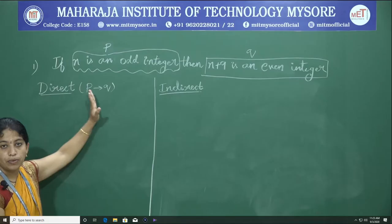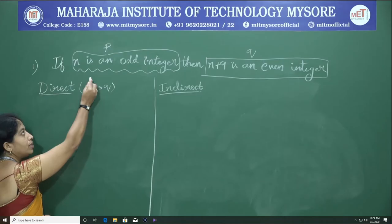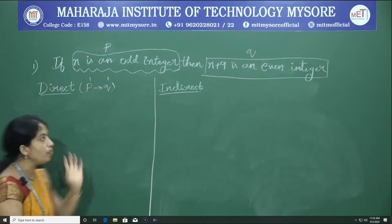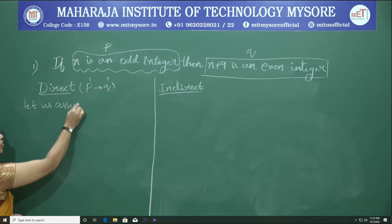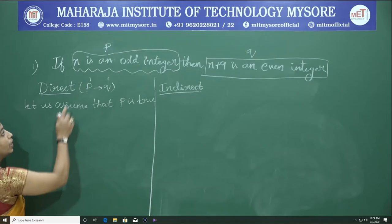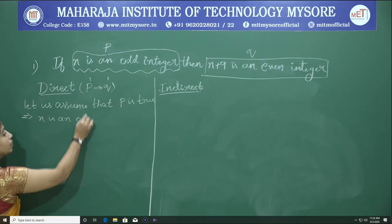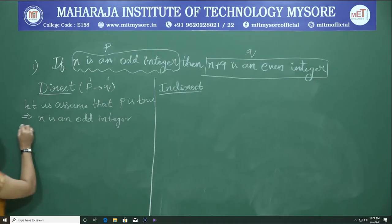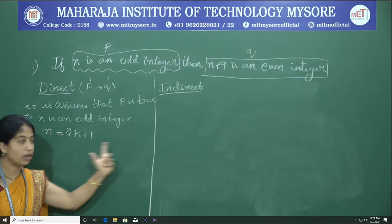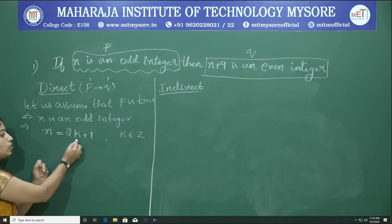For the direct proof, we assume P is true — that is, n is an odd integer. An odd integer can be written as n equals 2k plus 1, where k belongs to the set of all integers. For example, if k equals 1, we get 2(1) + 1 = 3, an odd number; if k equals 2, we get 2(2) + 1 = 5, also odd.